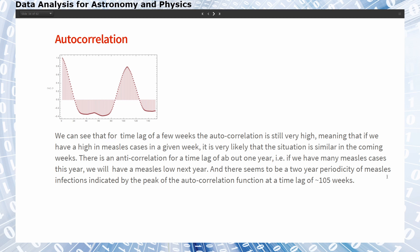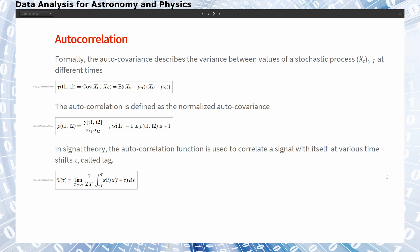This autocorrelation approach can also be used in two-dimensional or multi-dimensional cases, for example to examine how certain spatial scales dominate an image or higher-dimensional data. Formally, the autocovariance describes the variance between values of a stochastic process at different times — so instead of X and Y, we have X at time one and X at time two. The autocorrelation coefficient is defined as the normalized autocovariance, and from signal theory it can be computed as the product of X at time t with X at a shifted time t, summed over all times.